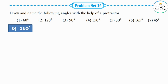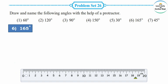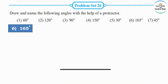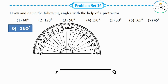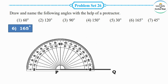The next measurement is 165 degrees. We need to draw a 165 degree angle. First draw the arm with a ruler and name it PQ. We need to draw a 165 degree angle at point P. Place the protractor and start counting.